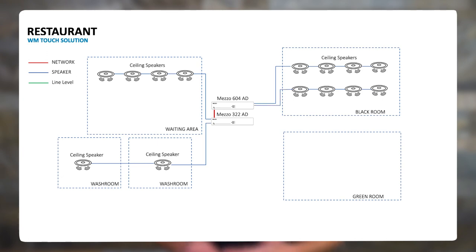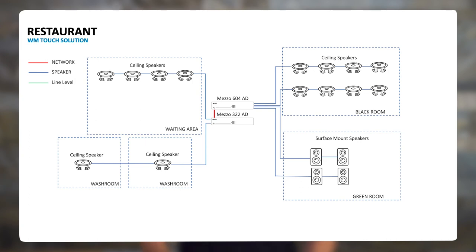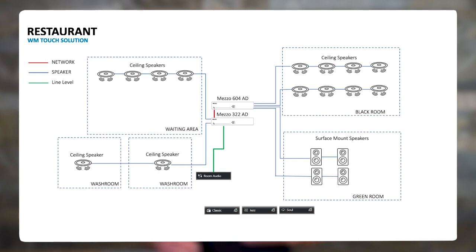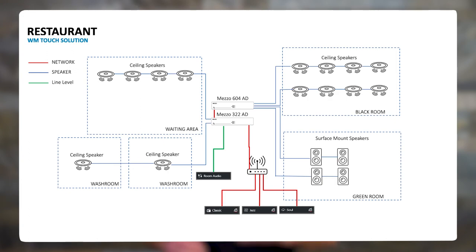Any of the six amplifier channels available in the two Mezzo units can take membership of a zone. The next step is to create the sources for our system. We will create one stereo analog input for a local source like a computer or mobile phone connected to one of the Mezzo units. By enabling Dante sharing for this input, we will automatically make it available on the Dante network and therefore to the second Mezzo unit. We will also add background music sources into the system via Dante — those three sources are immediately available to all Mezzo units connected to the network.